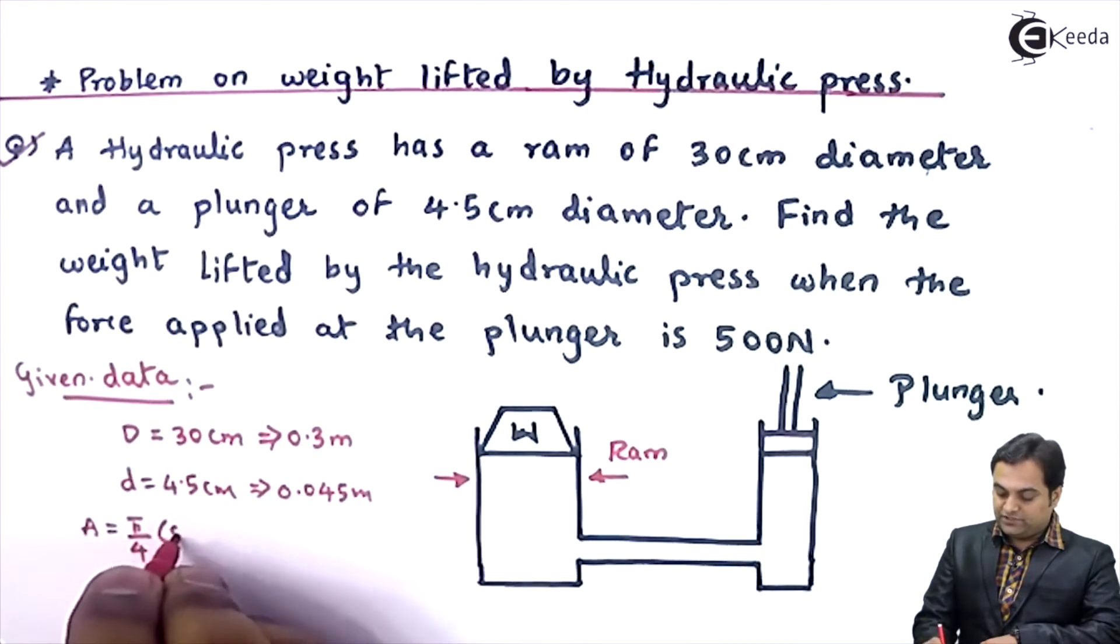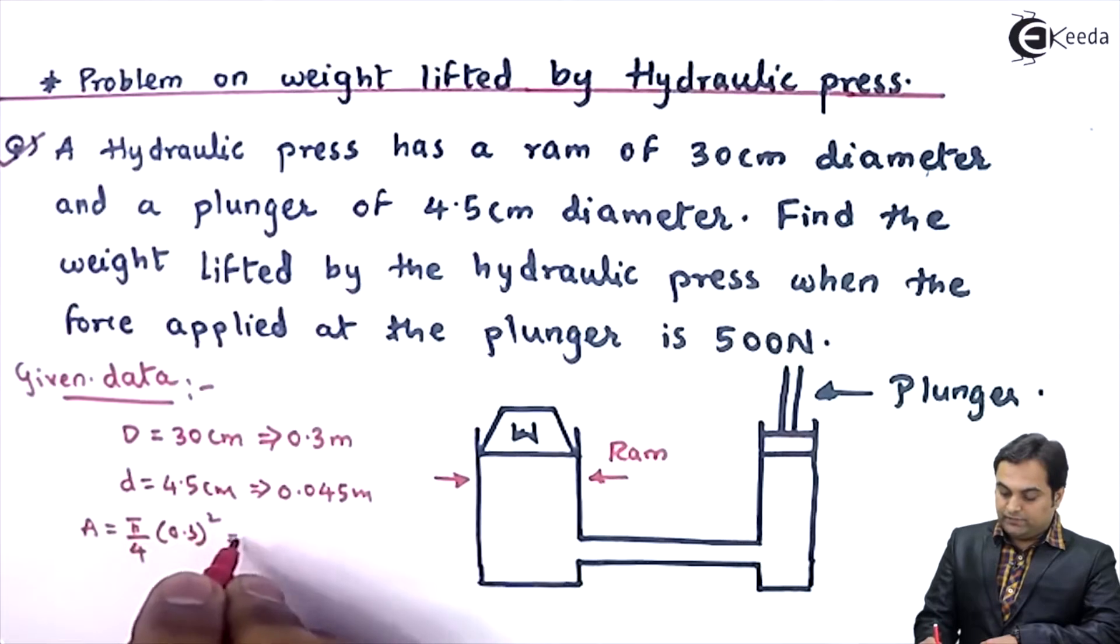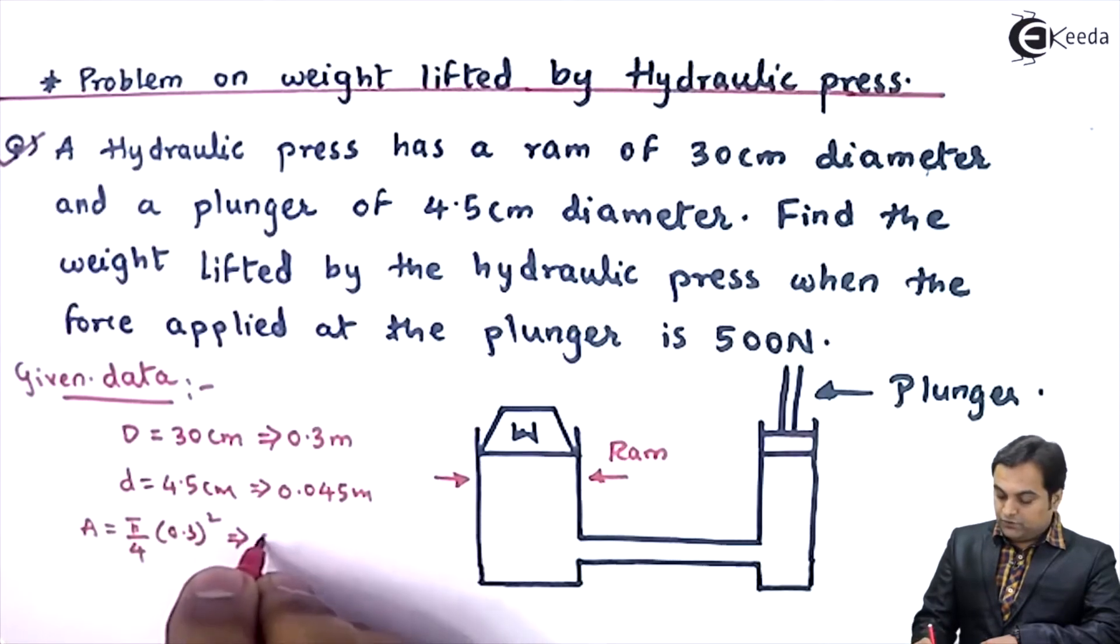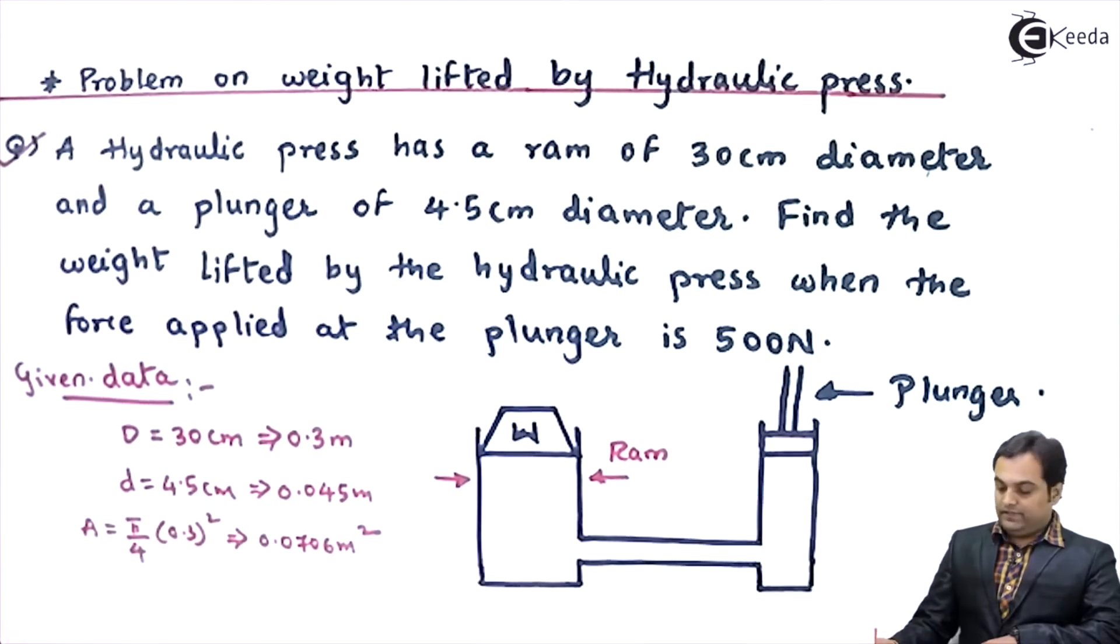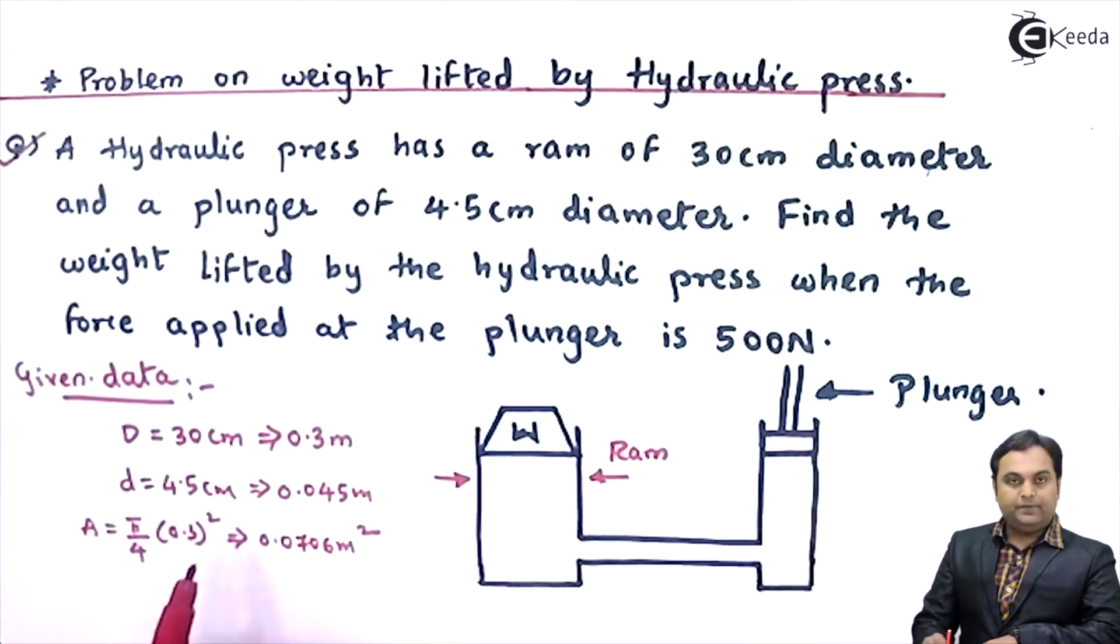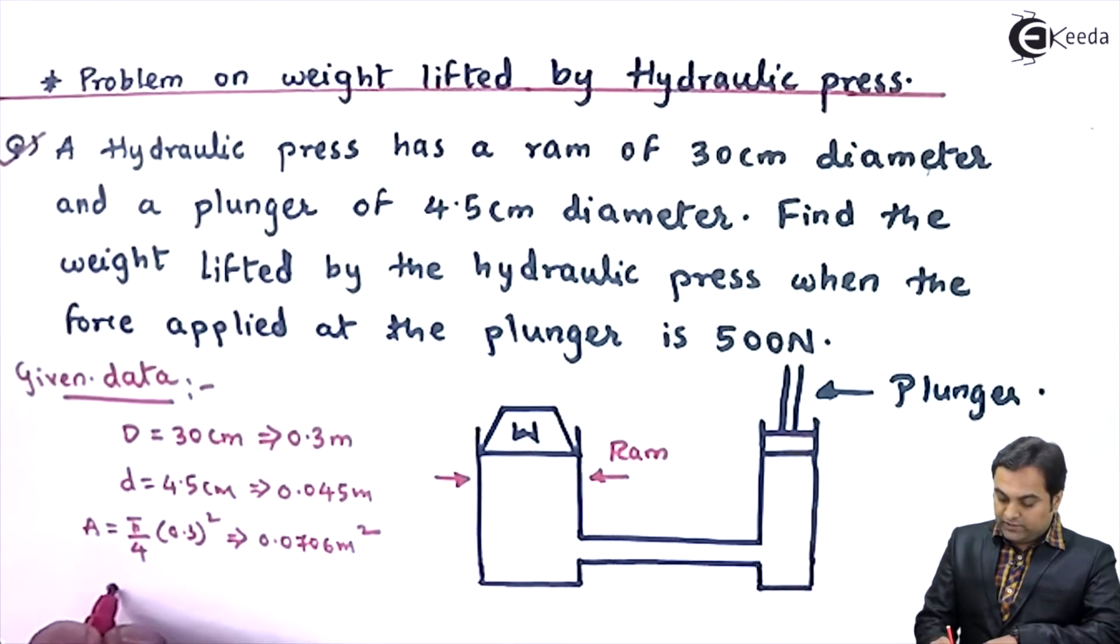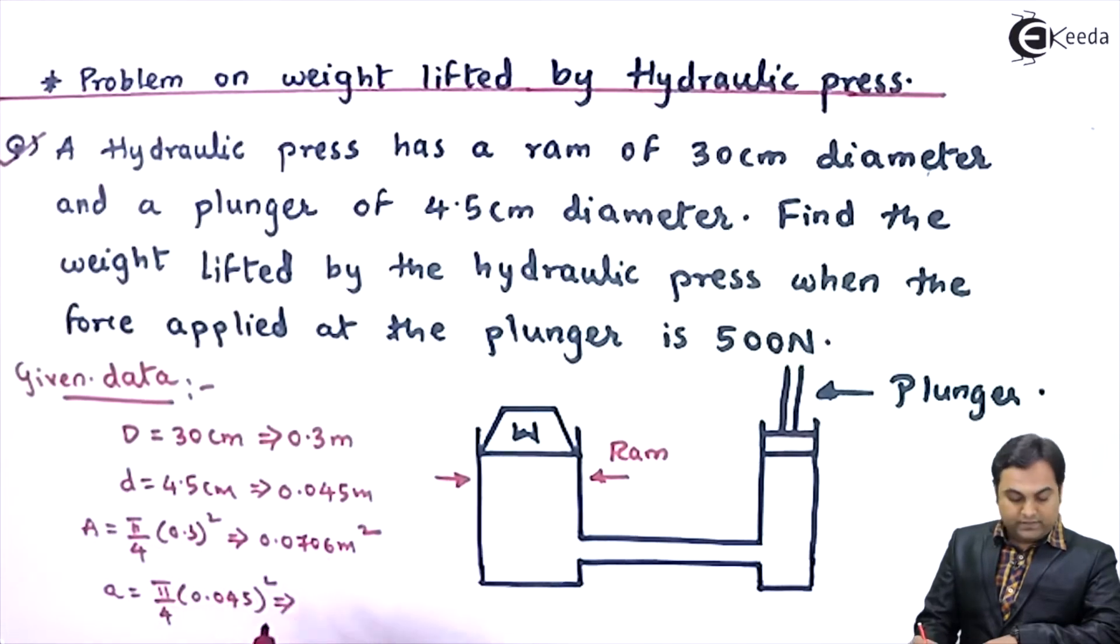Once we have the diameter, capital D square which is 0.3 square, my answer is 0.0706 meters square. Next, plunger area will be small a, it is equal to pi by 4 into 0.045 square and that is 0.00159 meters square.